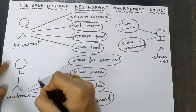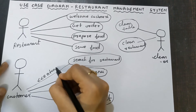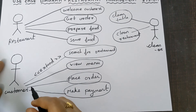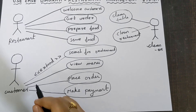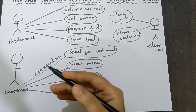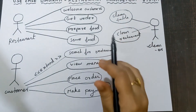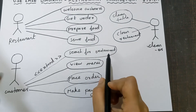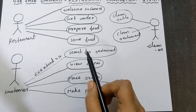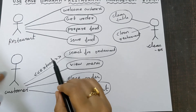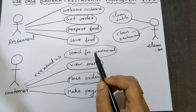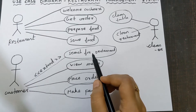Search for restaurant — this is extend, meaning it is not mandatory. Searching for a restaurant by the customer is not mandatory. Some customers are very fixed — they want to go to a specific restaurant only. When they have already decided which restaurant to go to, they need not search for one or look at a list of restaurants. So searching for restaurant is not mandatory when the customer has already fixed a restaurant in their mind.